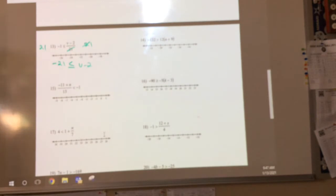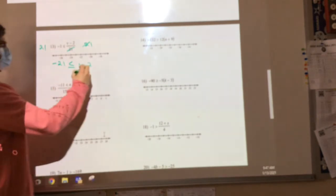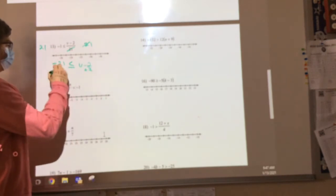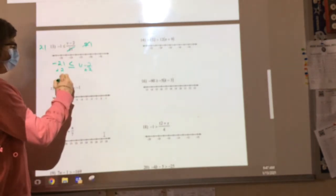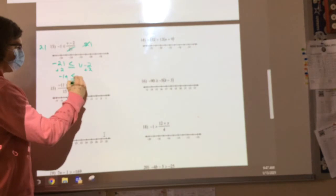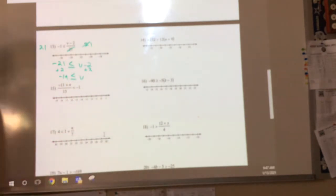Now we're just back to a one-step problem. What I'm going to do now is I'm going to add 2 to both sides. I'm going to get negative 19 is less than or equal to V. We're good there?